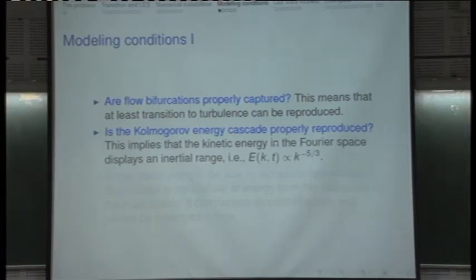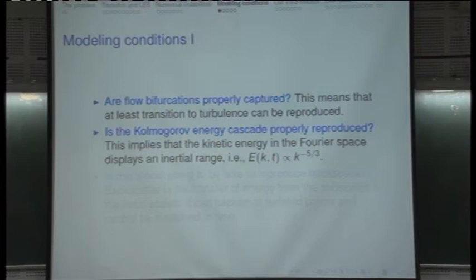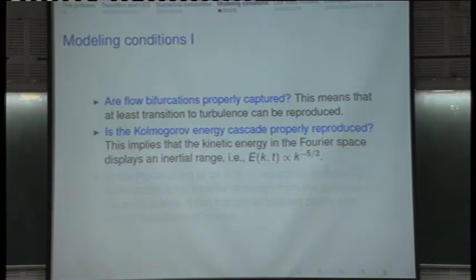If that is not satisfied, you can throw away the model. The most important issue is: is the Kolmogorov energy cascade properly reproduced? That means that you are able to reproduce the inertial range, at least part of it. This is the most important thing.